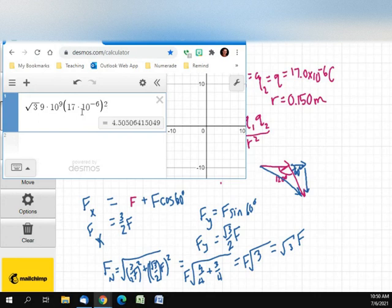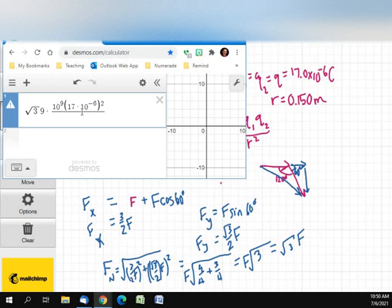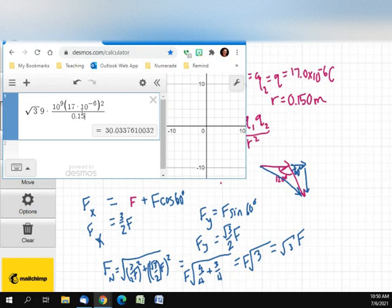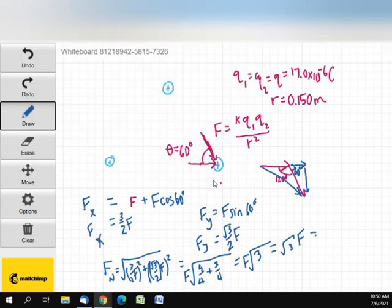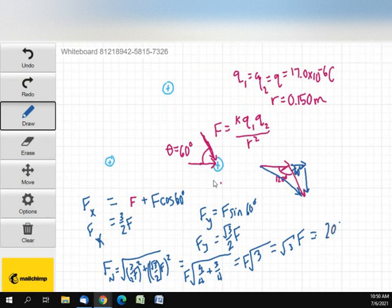K, Q2 over D squared, or R squared, 0.15 squared, which gives me 200 newtons, which is the correct answer. There's three significant digits, so I can write that as 200 newtons.